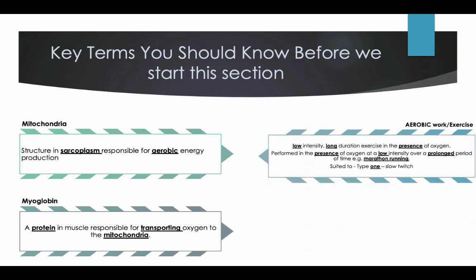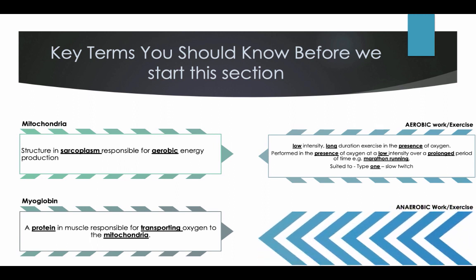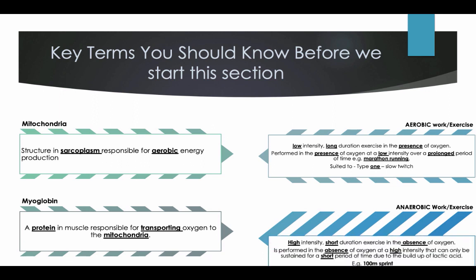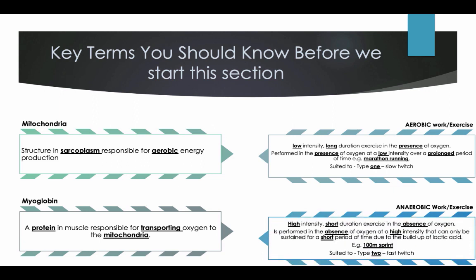Aerobic work: low intensity, long duration exercise in the presence of oxygen, performed over a prolonged period of time — for example, a marathon run. This is suited to type 1 slow twitch fibres. Anaerobic work: high intensity, short duration exercise in the absence of oxygen, that can only be sustained for a short period of time due to the build-up of lactic acid — for example, a 100 metre sprint. This is suited to type 2 fast twitch muscle fibres.